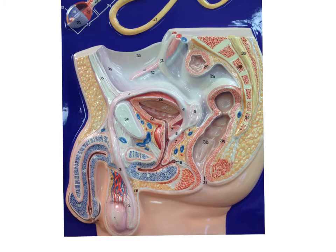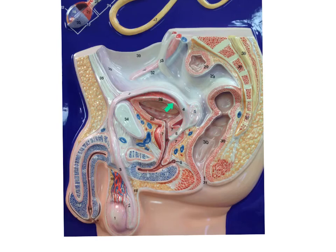This is the male reproductive model. We'll begin with the scrotum that surrounds the testes. Here we have the epididymis. This is the vas deferens, or ductus deferens. It continues around. Here we have the seminal vesicle. The ejaculatory duct. This is the urinary bladder.